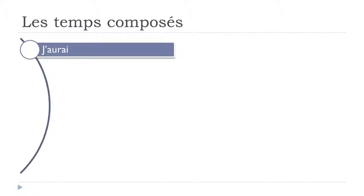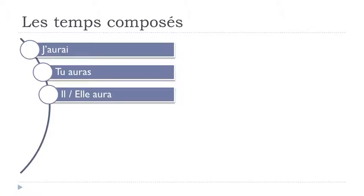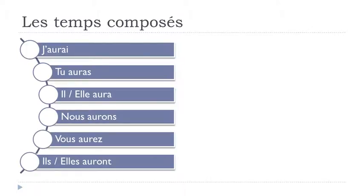Avoir at the future tense: j'aurai, tu auras, il aura, elle aura, nous aurons, vous aurez, ils auront, elles auront. Final S not pronounced for tu auras and nous aurons with liaison; Z sound for vous aurez; final T not pronounced for ils auront and elles auront.